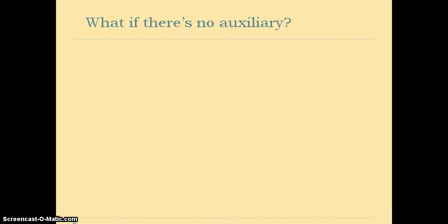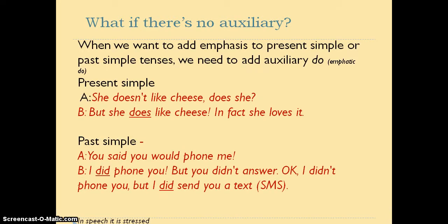So, what happens if there is no auxiliary? Well, if we want to add emphasis in a sentence like present simple or past simple, where we don't have the auxiliary, we will use what linguistics call the emphatic 'do'. It is a 'do' which has no particular meaning — it just gives emphasis — but it still carries grammatical information. Therefore, if we're talking about the third person singular, we use 'does', and if we speak in the past, we use 'did'.